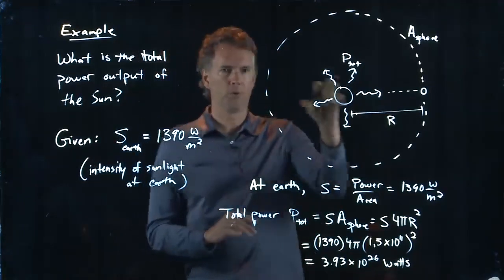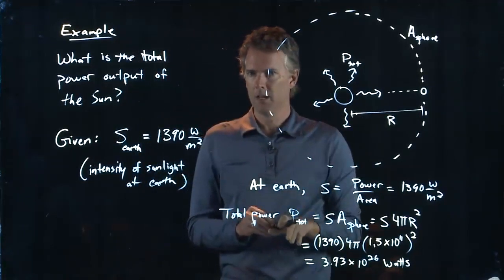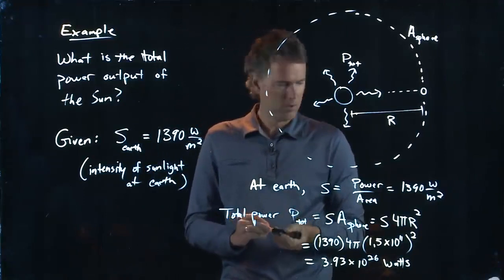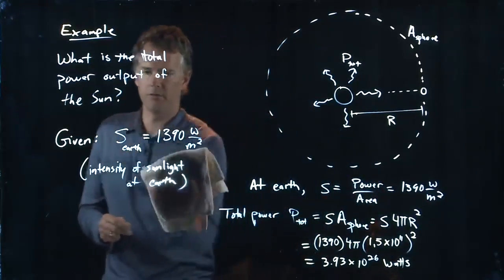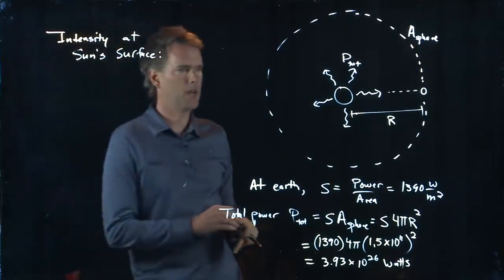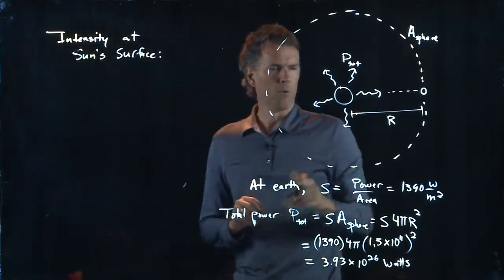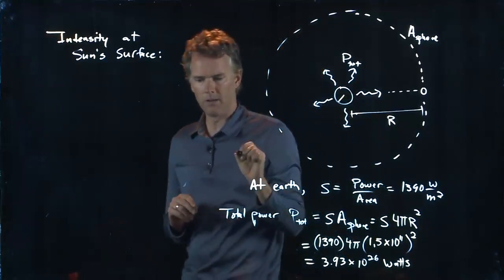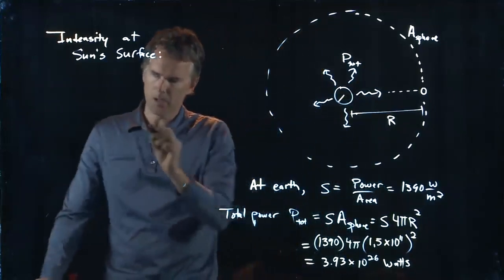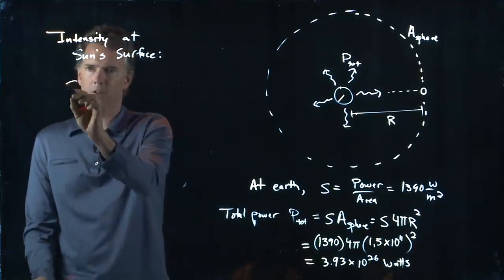But if that's the total power coming out of the sun, let's ask a follow-up question. What is the intensity at the sun's surface? How do we do that? Well, we're going to need to know the radius of the sun. And if we do that, then we can calculate the intensity at the sun's surface.